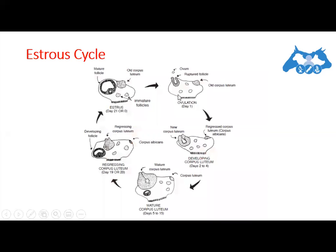Pro-estrus is the period between the regression of the corpus luteum of the previous cycle and estrus. The period of pro-estrus involves follicle development. Here you can see the sequence of anatomical and hormonal changes that occur during a typical 21-day cycle in which pregnancy does not occur.